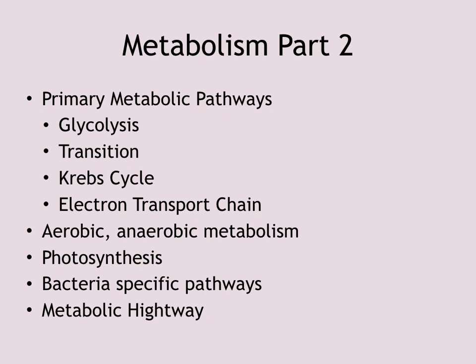Welcome back. We are now going to cover part two of metabolism. In this lecture, we're going to cover the very specific pathways that are part of what we call primary metabolism. Primary metabolism includes glycolysis, a transition step, the Krebs cycle — also known as the citric acid cycle or tricarboxylic acid cycle (TCA cycle) — and finally the electron transport chain.